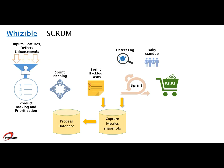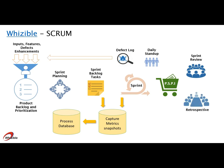During this stage, the system automatically captures data for metrics from the planned tasks, defects, and the task actual updates. This information is stored in the system as a snapshot and used by the quality team for analysis.